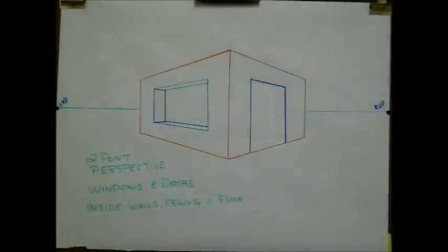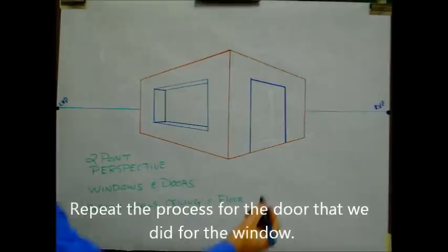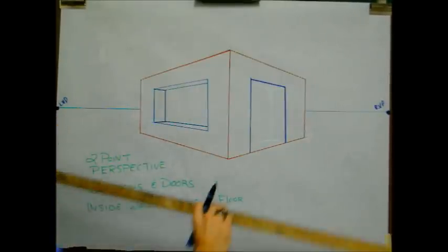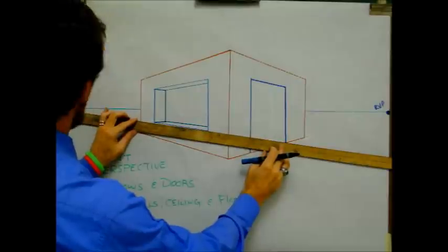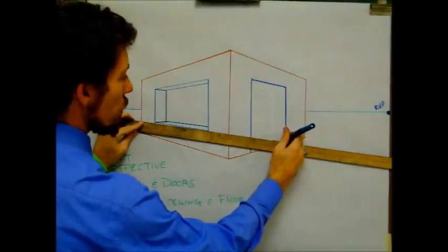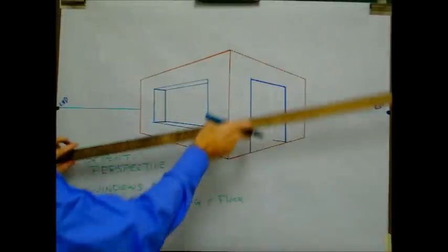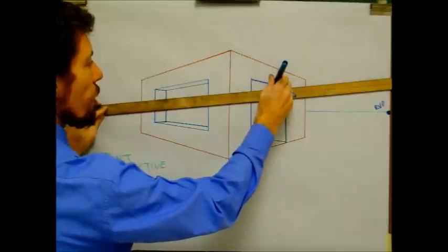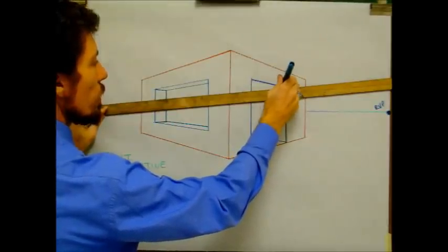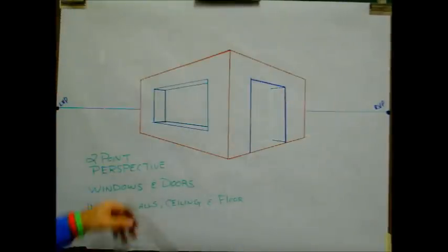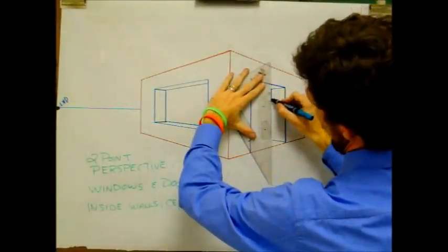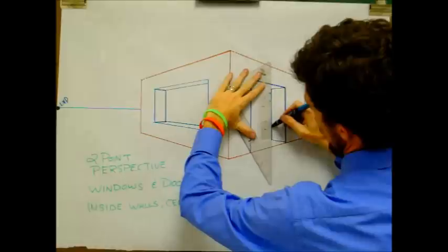Now we're going to do the same thing on the door that we did on the window. To start, I'm going to go from the bottom right corner — just like we did over there — but the opposite way, towards my left vanishing point. I'll draw that in, a little larger so it's easier to see. Then I'll do the same thing at the top, from the upper right corner toward my left vanishing point. To finish that side of the door frame, I'm going to drop in a vertical line — draw that vertical line in.